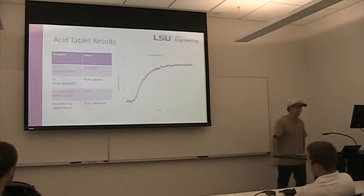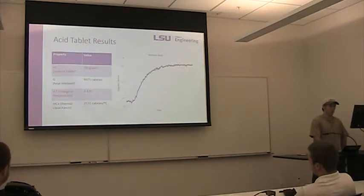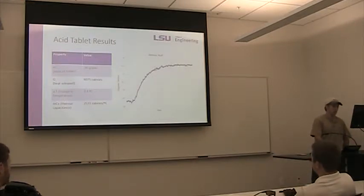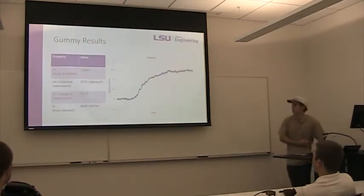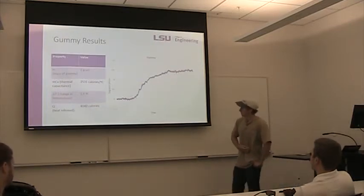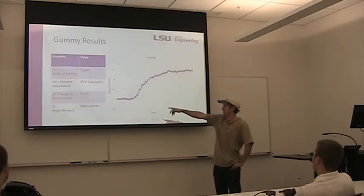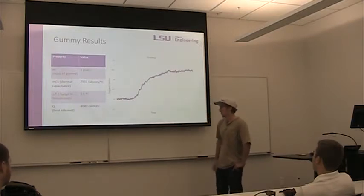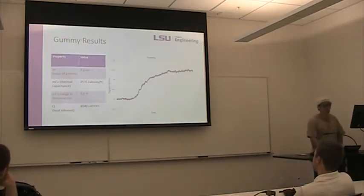Our determined thermal capacitance was 2,531 calories per gram. Here's a graph showing the transient temperature over a period of about 30 seconds to a minute. You have to let it reach equilibrium before you can consider the measurement. Using that thermal capacitance, and based on our measured change in temperature for the gummy combustion reaction of 1.6 degrees Celsius, we determined it was releasing about 440 calories when you combust approximately one gram of gummy.